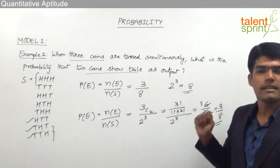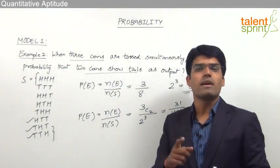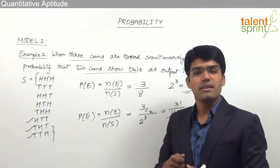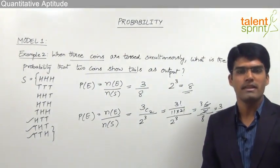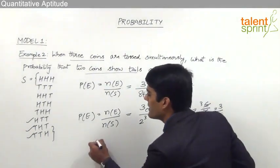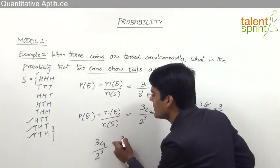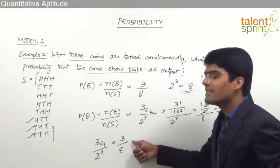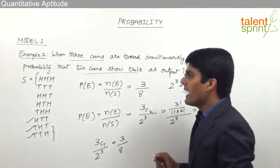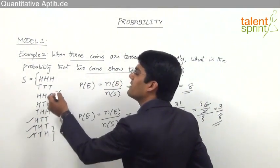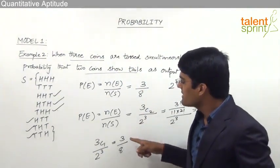Similarly, the probability that only one coin shows a tail: we need to select 1 coin out of 3 to show a tail, with the remaining two showing heads. That is 3C1 / 2³ = 3/8. This is confirmed by the sample space — exactly three outcomes have only one tail: HTT... wait, one tail means HTH... specifically HTT, THT, TTH have two tails. The one-tail outcomes are HTT... the three cases with one tail and two heads are 3 out of 8.